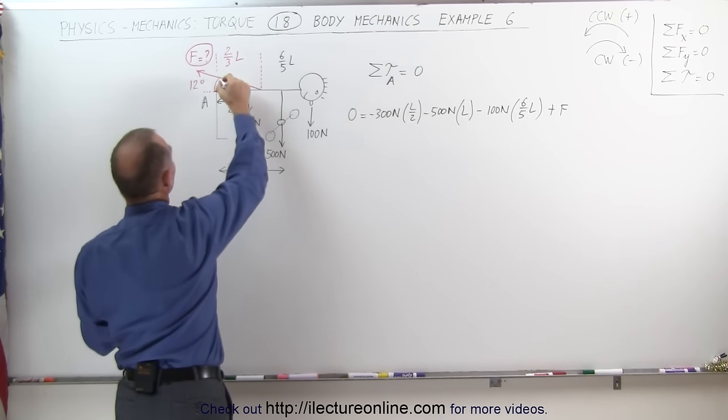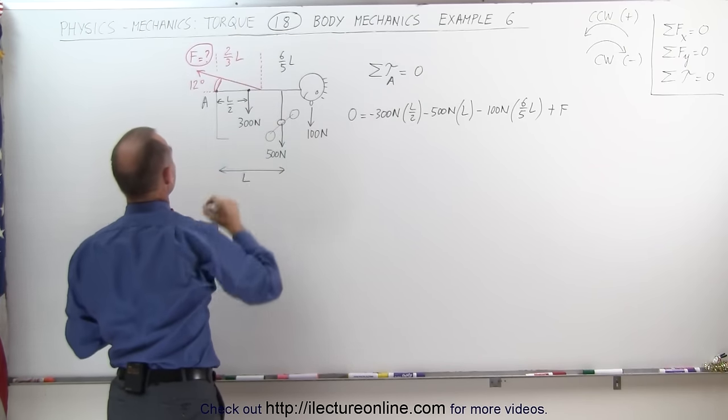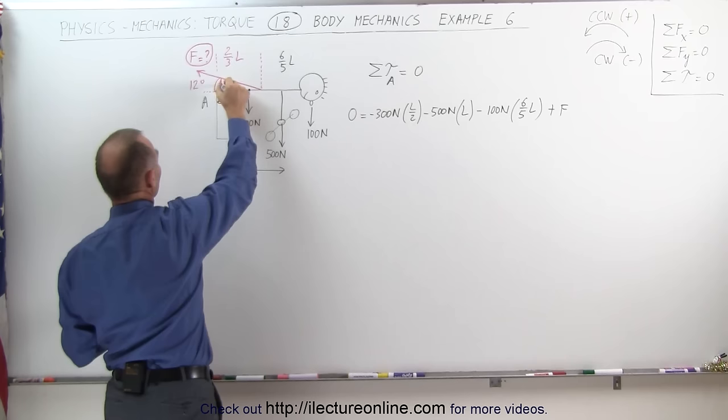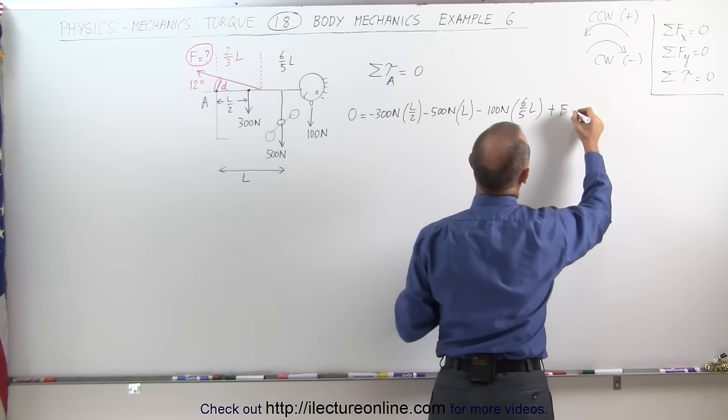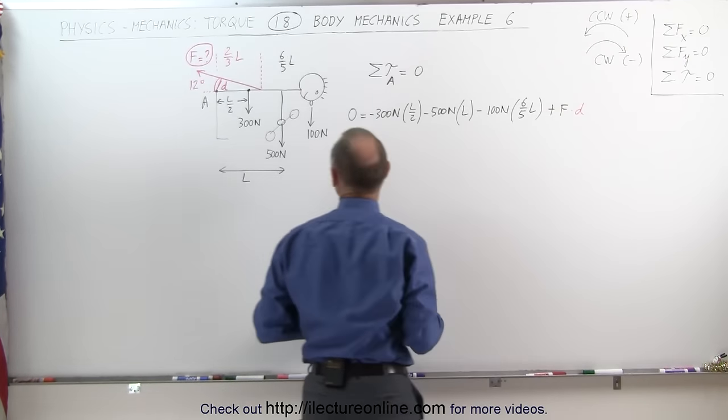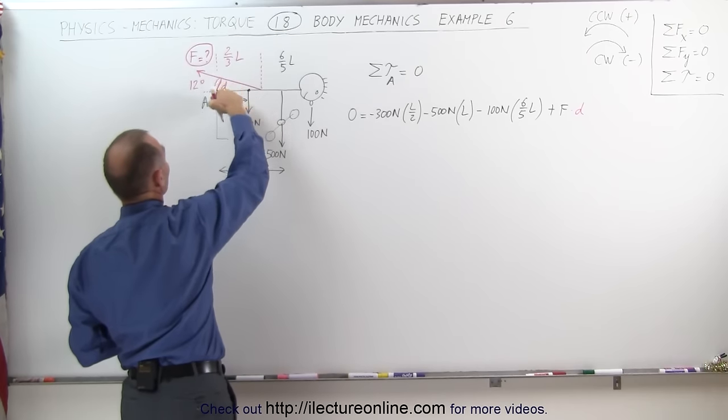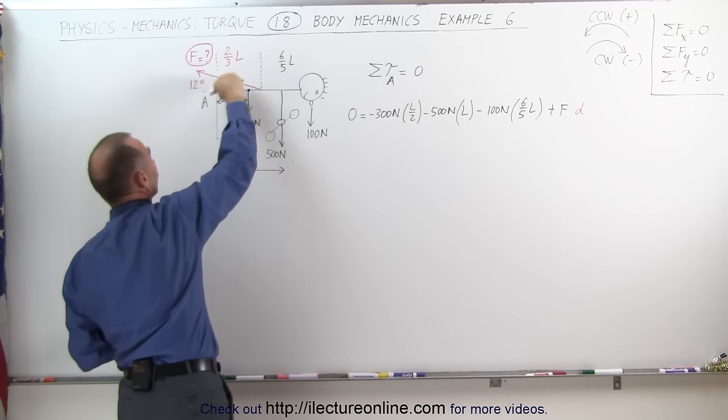So let's go ahead and complete this triangle right here. This is the perpendicular distance, let's call this D, and so force times D. That's the perpendicular distance from the line of action of the force, which is right here, to the pivot point.